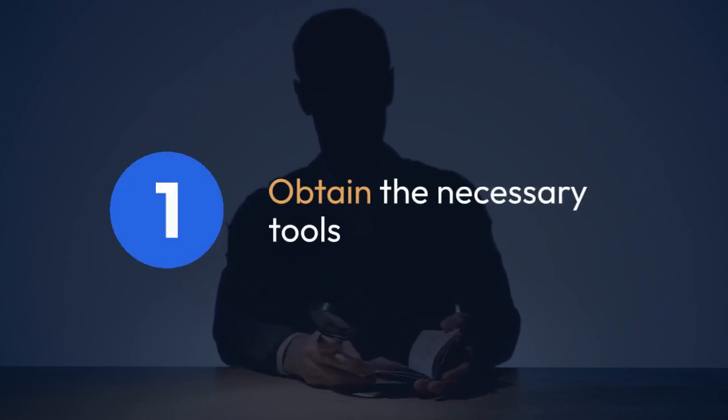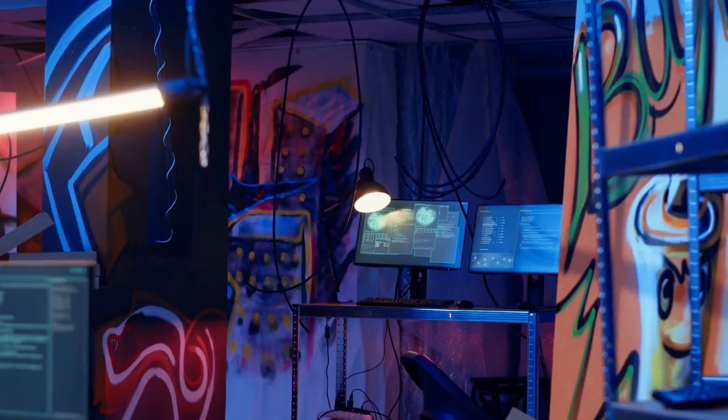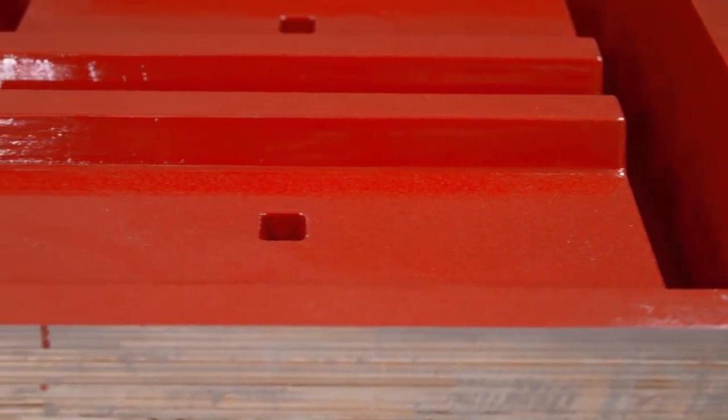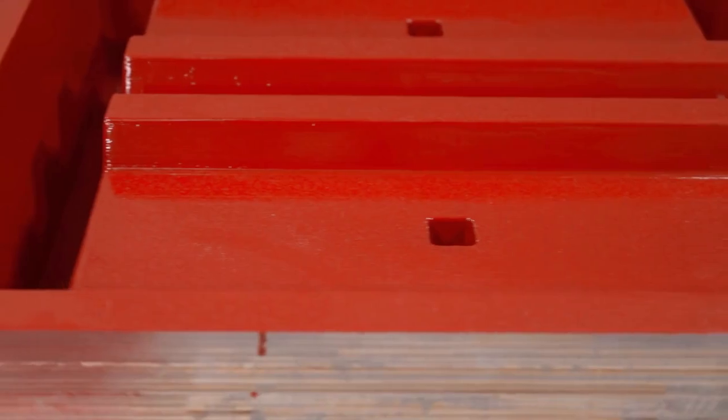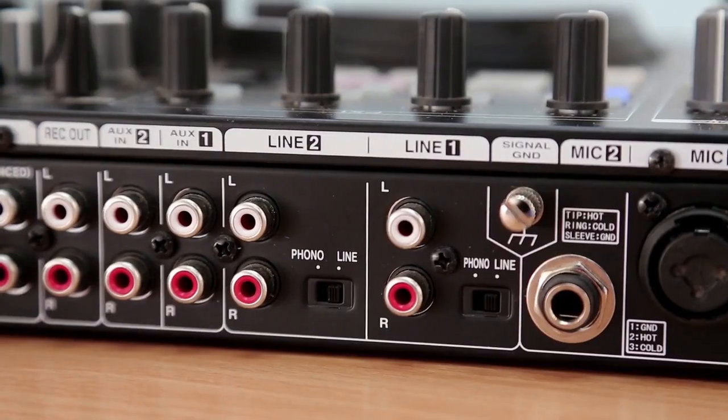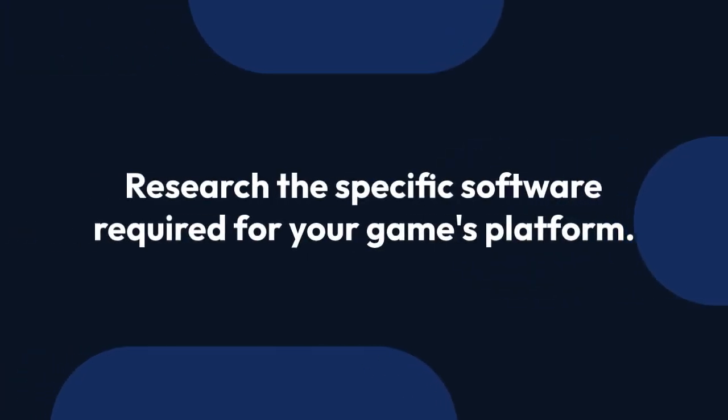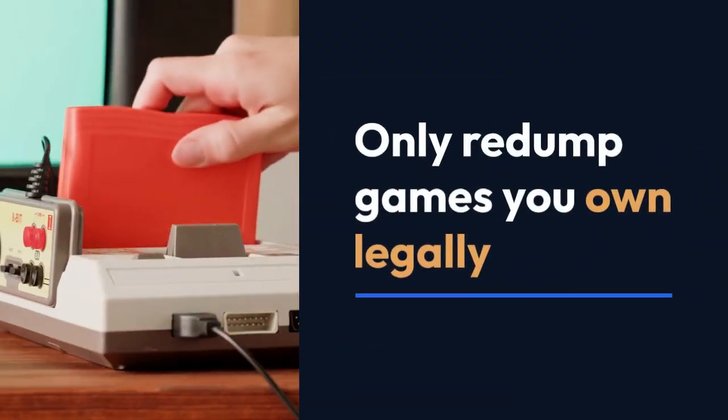Step 1: Obtain the necessary tools. You'll need a program capable of creating game backups. Popular choices include GodMode9 for 3DS games, Wii U USB Helper for Wii U games, and various applications depending on your console. Research the specific software required for your game's platform. Remember to only redump games you own legally.